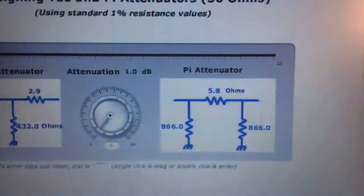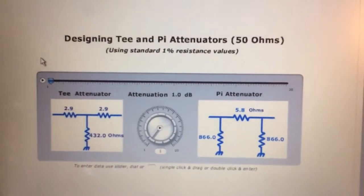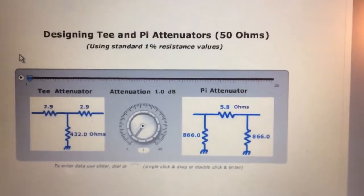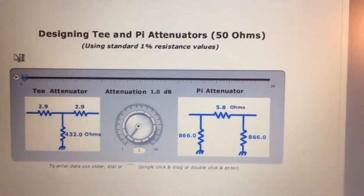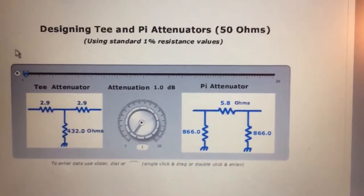So when we talk about attenuators, there's two different types. On the left side, you see what's called the T attenuator. This is the most common topology. And on the right side, you see a pi attenuator. It's in the shape of a pi.